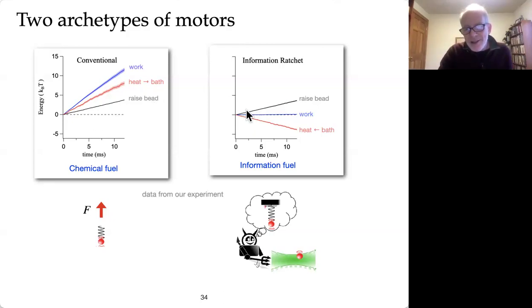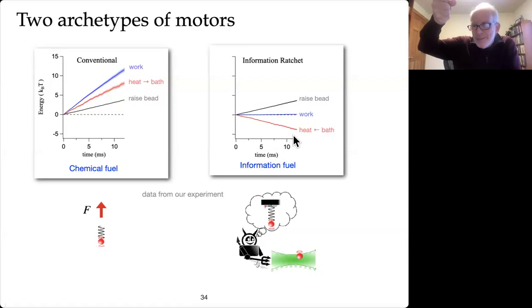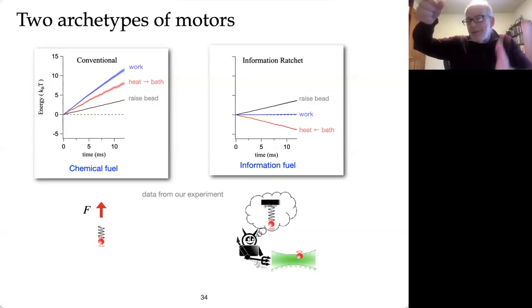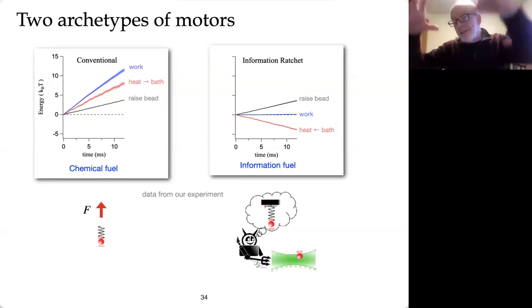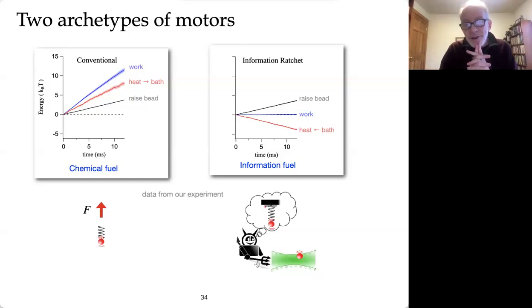The situation with this so-called information ratchet or information engine that we're constructing, we raise the bead. And this is actually constructed to raise it at the same rate. But we've, by this condition on compressing and then extending the spring, we're doing no work, which means that the energy to make it go up is coming from the bath. So in doing this, rather than heating the bath, which is what happens here, we're actually cooling the bath as it goes up. Because it's motion fluctuations of the bath, energy from the bath that are being rectified to drive this up. So it's really kind of remarkable that you can do this. And as I said, this is actually experimental data. So I've skipped ahead a little bit.